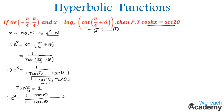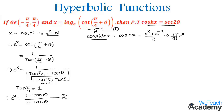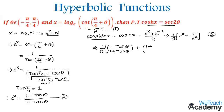Let us name this as equation 2. Now in order to prove this value, let us consider hyperbolic cos x. According to its definition, the value of hyperbolic cos x is equal to e power x plus e power minus x divided by 2. We can write this as 1 by 2 into e power x plus 1 by e power x. By substituting the value of e power x using equation 2, we get 1 by 2 into 1 minus tan theta divided by 1 plus tan theta, plus 1 plus tan theta divided by 1 minus tan theta.